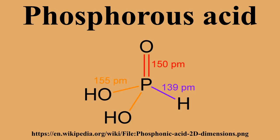The central phosphorus atom is assigned an oxidation state of +3. HPO(OH)2 is the product of the hydrolysis of its acid anhydride: P4O6 + 6H2O → 4HPO(OH)2.